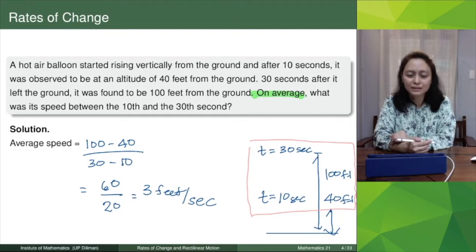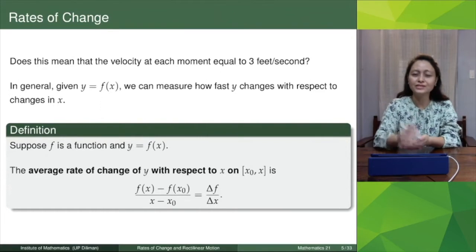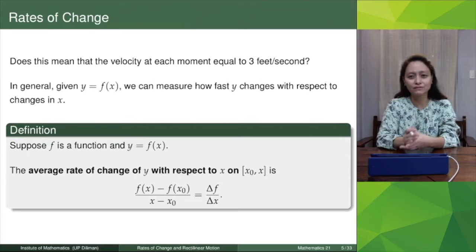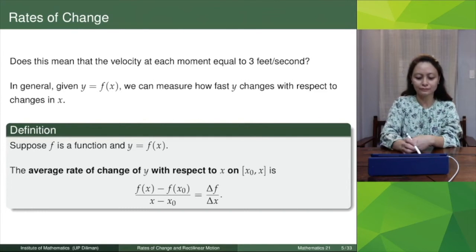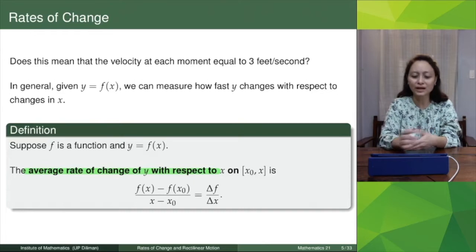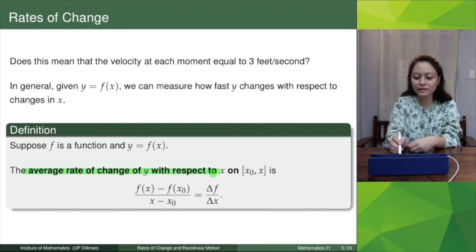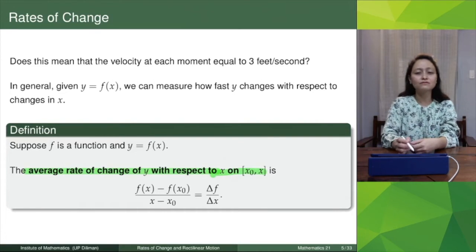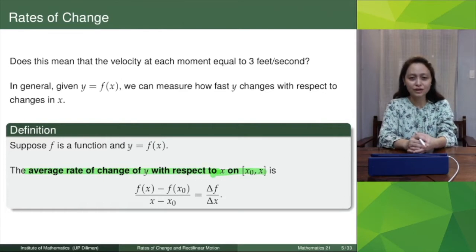This is the average speed between the 10th and 30th second. This does not mean the velocity at each moment in that interval equals 3 feet per second. In general, if y is a function of x, the average rate of change of y with respect to x on the interval x₀ to x is given by [f(x) − f(x₀)] / (x − x₀), or delta f over delta x.